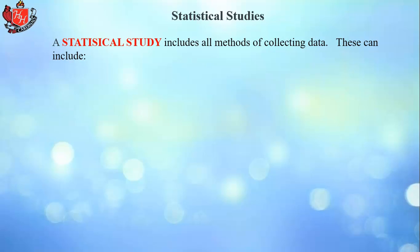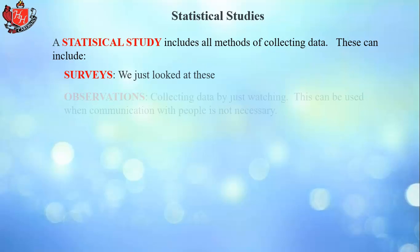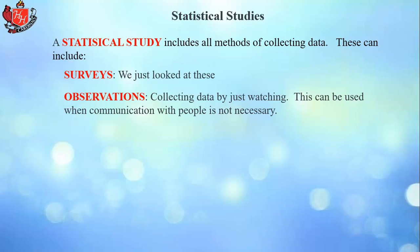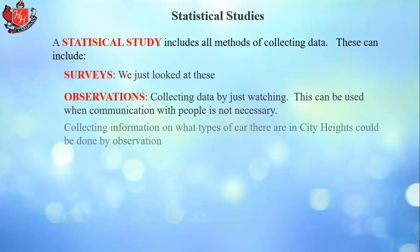A statistical study includes all methods of collecting data. Surveys are one way. Another is observation — collecting data by just watching. This is used when communication with people is not necessary. For example, collecting information on what types of cars there are in City Heights could be done by standing in front of Hoover and watching cars go by on El Cajon Boulevard. You don't need to talk to anyone — you just observe.